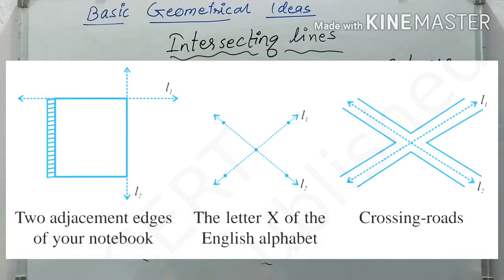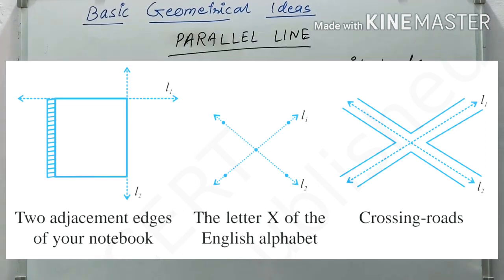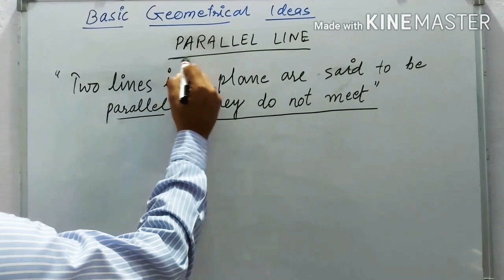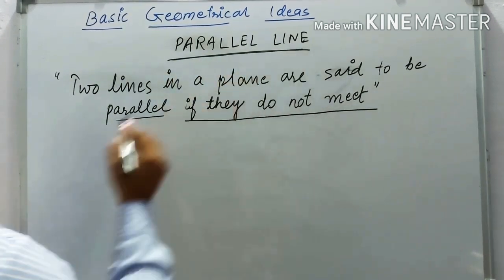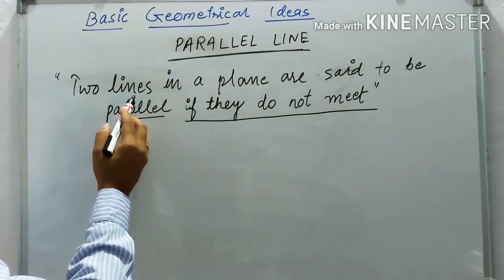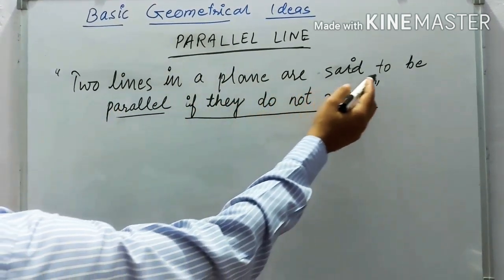Three examples of intersecting lines are: two adjacent edges of a notebook, the capital letter X, and crossing roads.